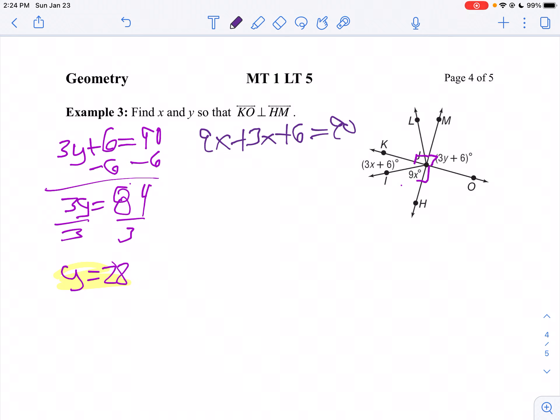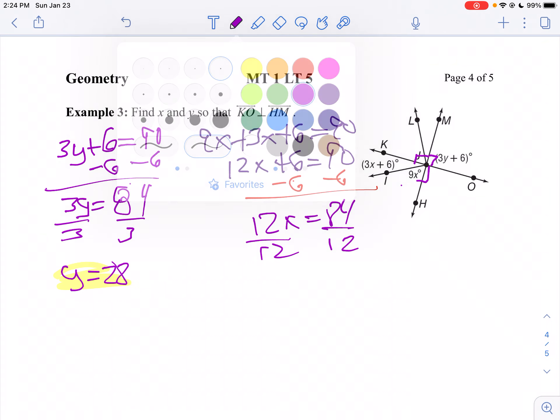Now let's solve for X. 9X plus 3X is 12X. Subtract 6 from both sides. We get 12X equals 84. Divide both sides by 12. 84 divided by 12 is 7.